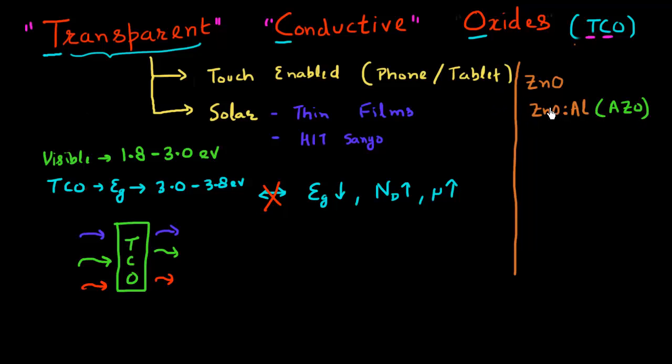Another very common TCO material is indium oxide, and many times it's doped with tin to make it more conductive. And this tin-doped indium oxide is also abbreviated as ITO, or indium oxide with tin doping.